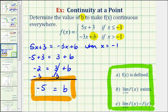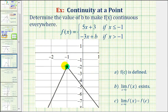So, if we go back and take a look at our graph for a moment, the graph to the left of negative 1, including when x is equal to negative 1, would be this piece here, where f of x is equal to 5x plus 3.